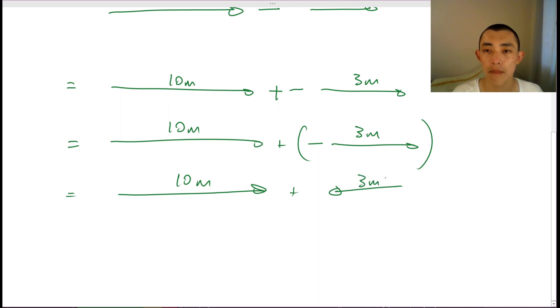So when you have a minus of a vector, it flips the vector. Just like how if you have a minus sign in front of a 3, it'll flip it, it'll become a minus 3.